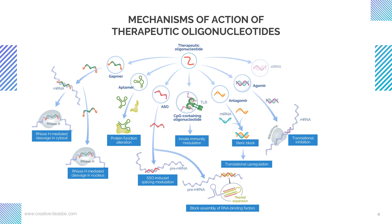In terms of siRNA, once siRNA enters the cell, it incorporates with other proteins to form the RNA-induced silencing complex, or RISC. Upon forming the RISC complex, siRNA unfolds to form a single-stranded RNA and scans to find the complementary mRNA. Subsequently, the single-stranded siRNA binds to its complementary mRNA and induces mRNA degradation, thus silencing gene expression of the particular mRNA.